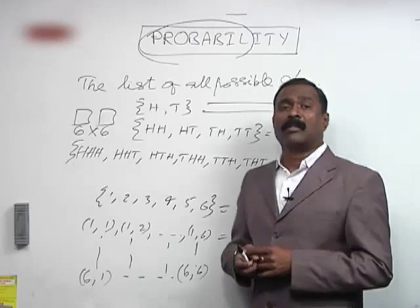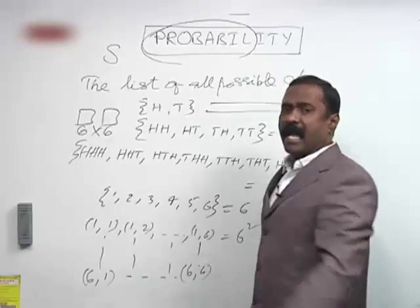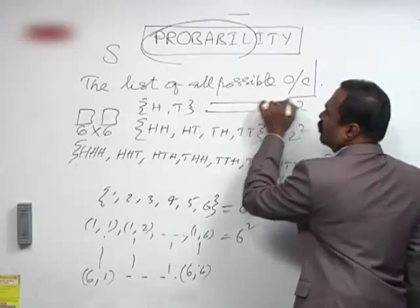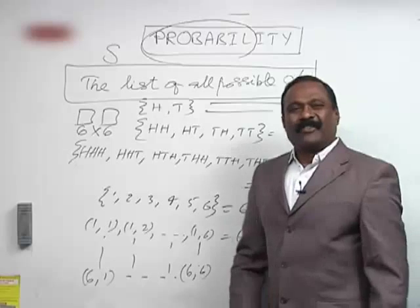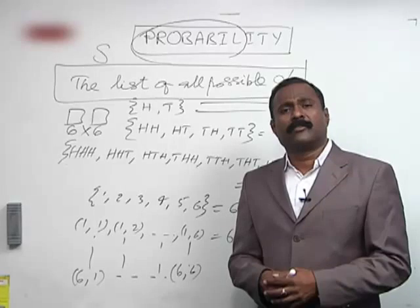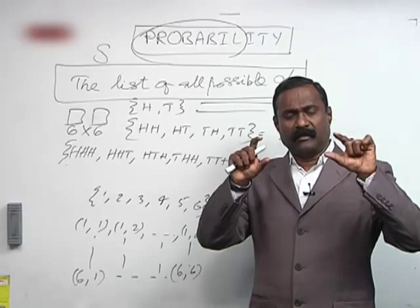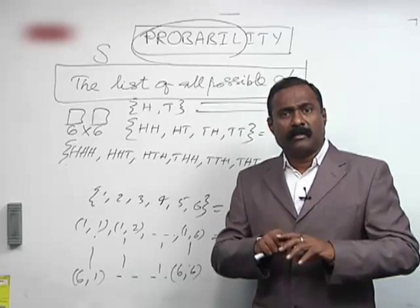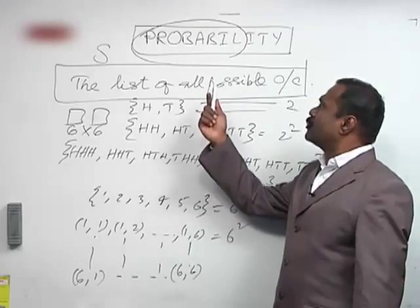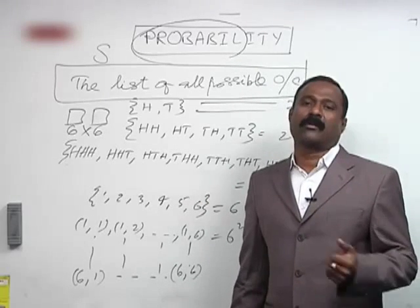The sample space or exhaustive events is generally denoted by S. It is simply the list of all possible outcomes. Like if you take 52 playing cards, there are 52 outcomes. Without knowing the total number of outcomes, the problem cannot be solved.